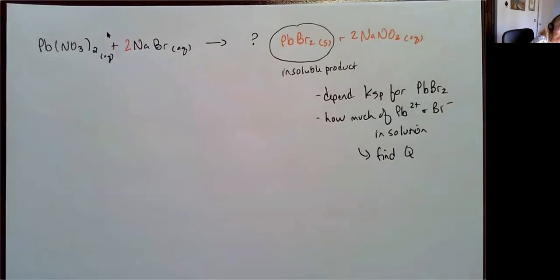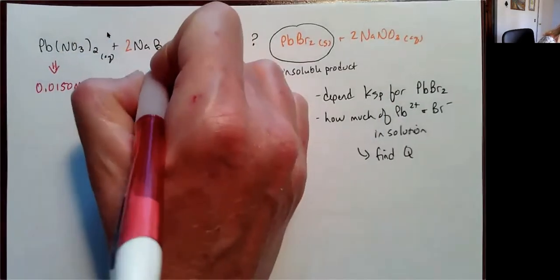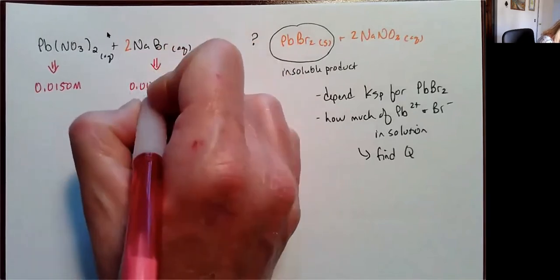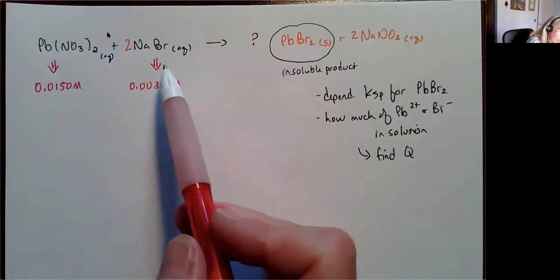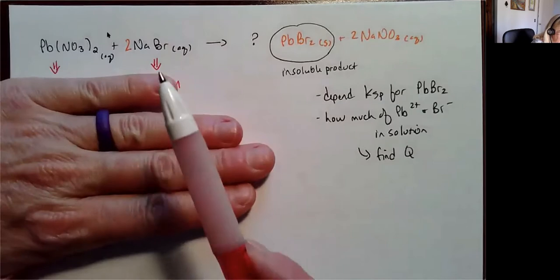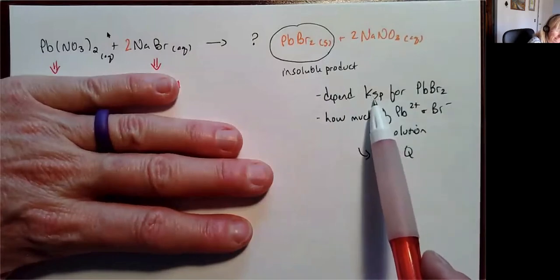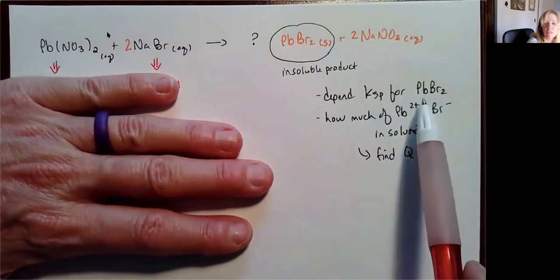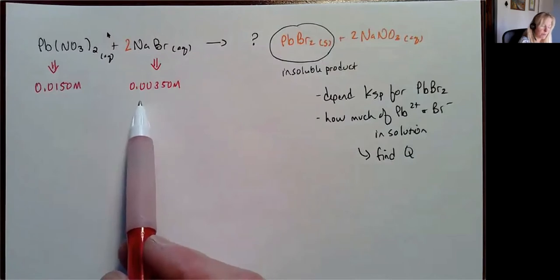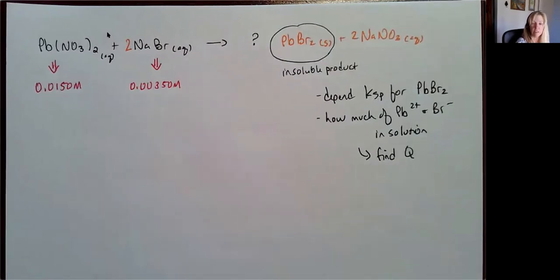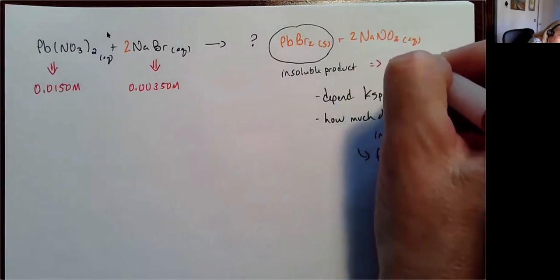Let's say I have a 0.0150 M solution of lead nitrate and a 0.00350 M solution of sodium bromide and I'm going to mix them together. In Gen Chem 1, you would have applied your solubility rules and said you'll form an insoluble product. But now in Gen Chem 2, we know there is a Ksp for lead bromide, and a small amount of these ions are going to remain in solution. So I have to determine if these are sufficiently concentrated to push me into the supersaturated region where Q is greater than Ksp, and then I'll see an insoluble product.